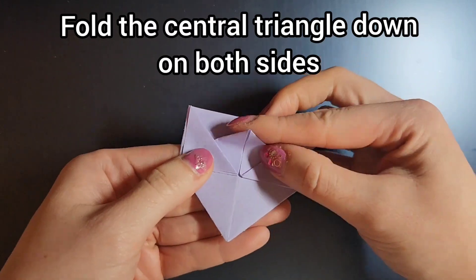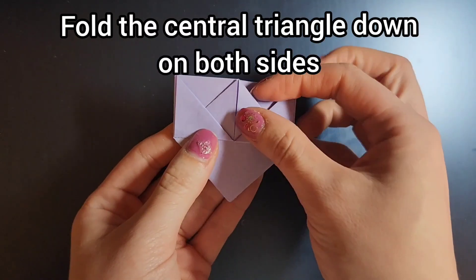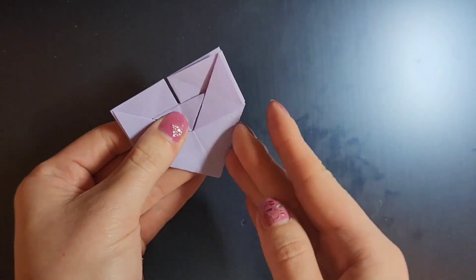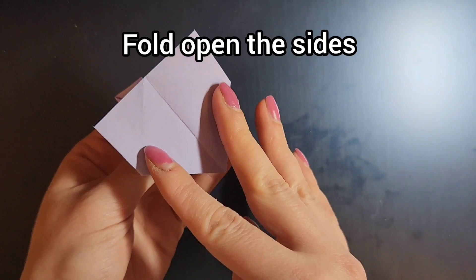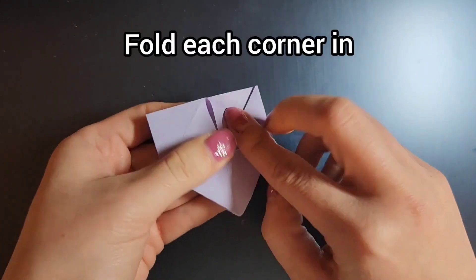Take the triangle in the center and fold it down on both sides. Now you'll turn it and open the flaps on the sides. Fold each corner in.